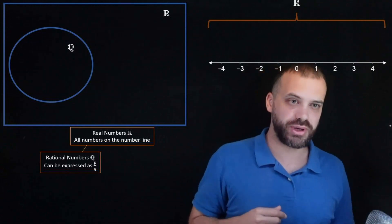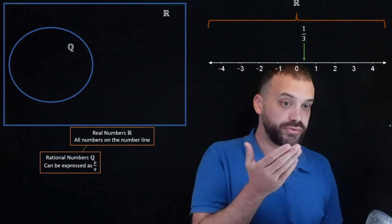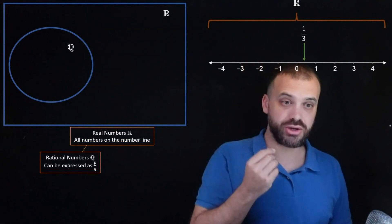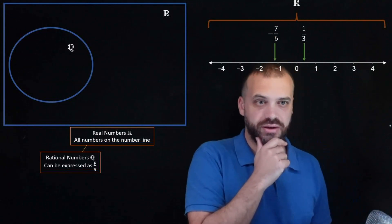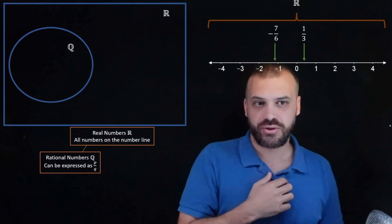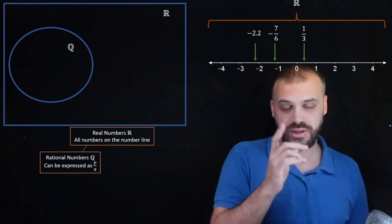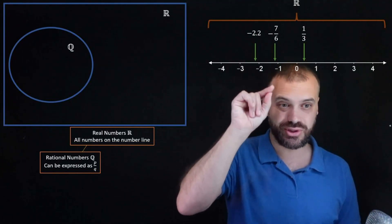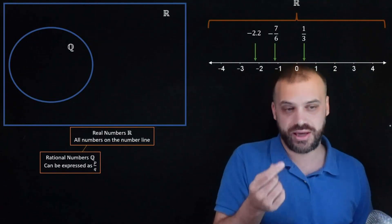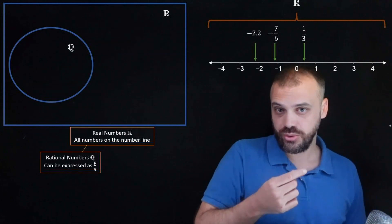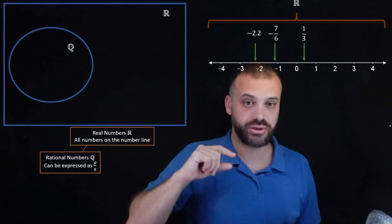So what are some examples from our number line? We have 1 over 3. That is a quotient. It's a rational number Q. We have negative 7 over 6. We have, this will surprise you perhaps, negative 2.2. Now negative 2.2 is not currently being expressed as a quotient but it can be expressed as a quotient, which is why we call it a rational number Q.